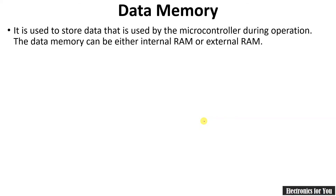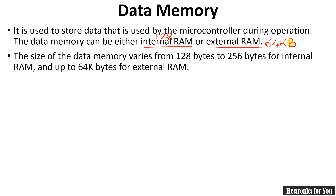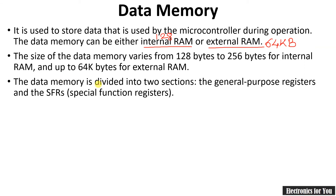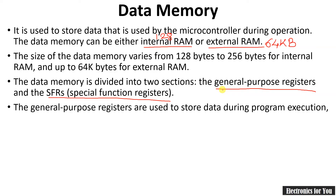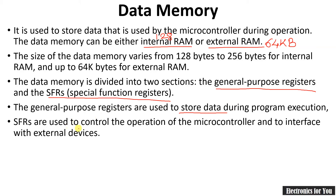Next is data memory, which is used to store temporary data during operation. Data memory can be internal RAM or external RAM. Internal RAM is 128 bytes for most versions of the 8051 family, and external RAM can be up to 64 KB. Data memory is also divided into two sections: general purpose registers, used to store data during operation, and special function registers (SFR), used to control the operation of the microcontroller. There are many types of SFR and they will be covered later.